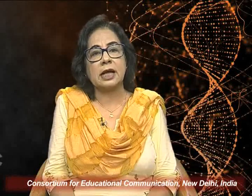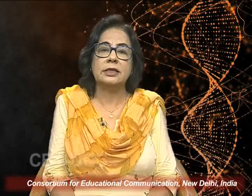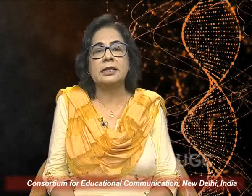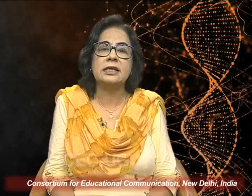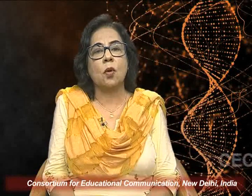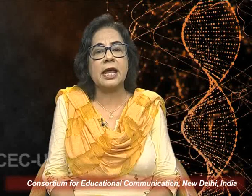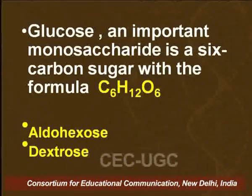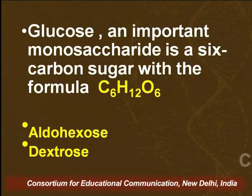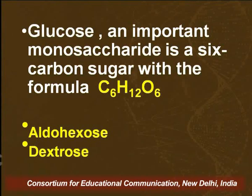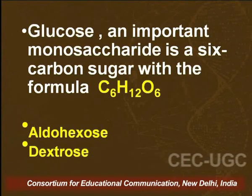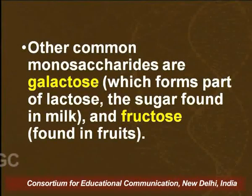In today's lecture, I shall be discussing the properties of monosaccharides further, taking glucose as an example. Glucose is an important monosaccharide with six carbons and an aldehyde group; its molecular formula is C6H12O6. Since it has six carbons along with an aldehyde group, it is known as an aldohexose. Since glucose is dextrorotatory — that is, it rotates the plane of polarized light in the right-hand direction — it is also known as dextrose.